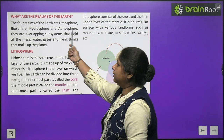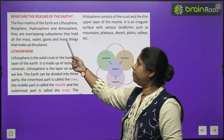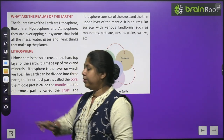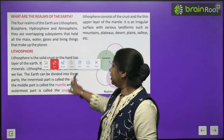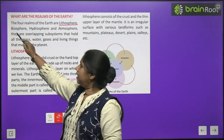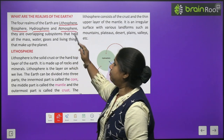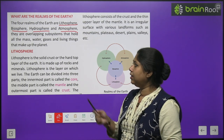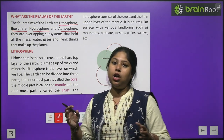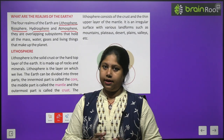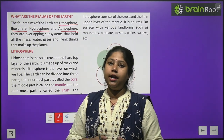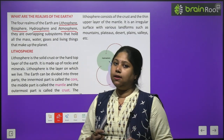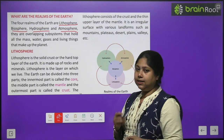What are the realms of the Earth? The four realms of the Earth are Lithosphere, Biosphere, Hydrosphere, and Atmosphere. Our Earth has four major realms. They are overlapping subsystems that hold all the mass, water, gases, and living things that make up the planet — including all land, water, and living beings such as humans, animals, and birds.